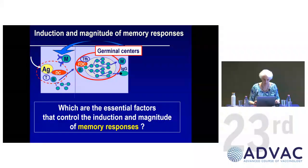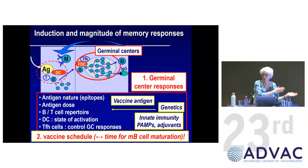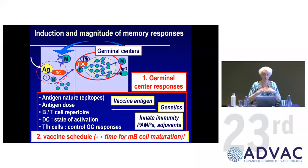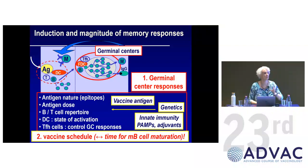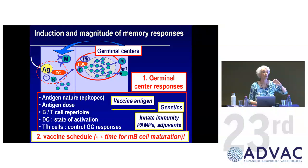The essential factors controlling the induction and magnitude of memory responses are the same that control germinal center induction: antigen nature, host repertoire, vaccine antigen genetics — everything. The first factor is to generate as many good germinal center responses as possible. One limiting thing in infants is that germinal center responses are limited during the first months of life, such that responses do not last as long and are not as strong.